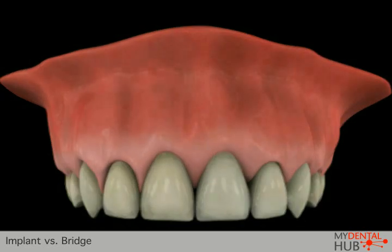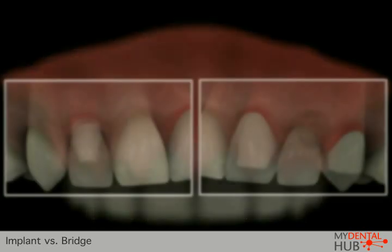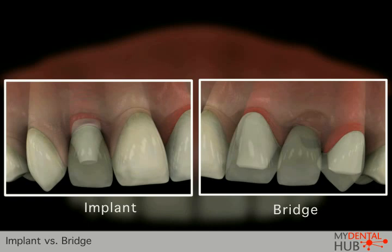When we compare these two restorations, we can see that both solutions provide an aesthetic replacement of a missing tooth. A bridge, however, involves the adjacent teeth, so if a problem arises, the surrounding teeth may be jeopardized. An implant is a standalone restoration, providing a much more conservative approach to the replacement of a missing tooth.